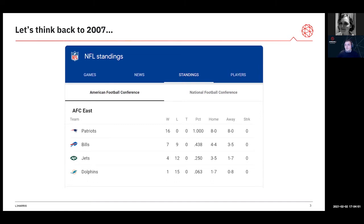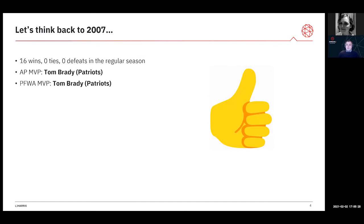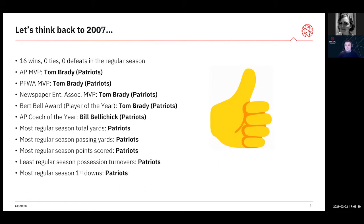If we start to look at the statistics, 2007 was a season that the New England Patriots stood out massively. Their regular season table shows 16 wins, no losses, no ties — a 100% win record with eight home wins and eight away wins. That is pretty much unbelievable. We can also see their individual performances: winning every single award — coach of the year, player of the year, MVP, most total yards, most scored, least possession conceded.